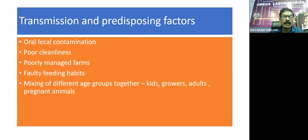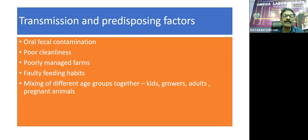Predisposing factors include poor cleanliness in farm, poorly managed farms, faulty feeding habits, and mixing of different age groups together — like kids, growers, adults, and pregnant animals — when they are kept in a single shed or single compartment. In that case, there are much more chances of transmission of the disease.